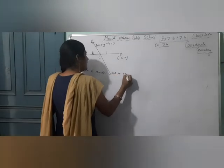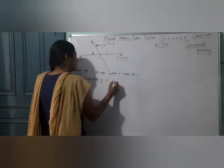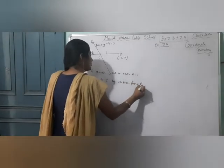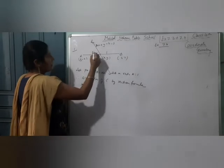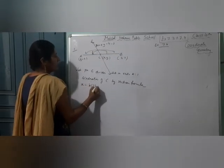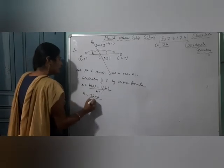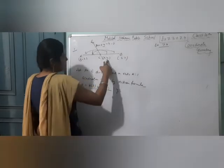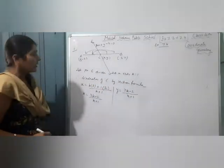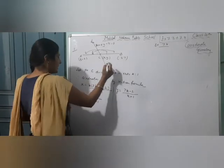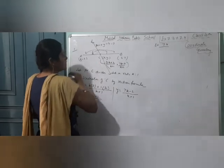Point C divides AB in ratio k:1. Therefore, coordinates of C by section formula: x = (3k + 2)/(k + 1) and y = (7k - 2)/(k + 1). So C ke coordinates aa chuke hain: ((3k+2)/(k+1), (7k-2)/(k+1)).